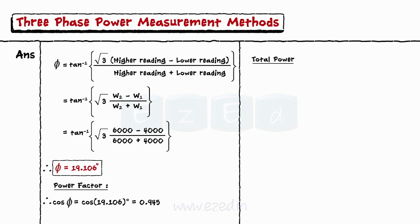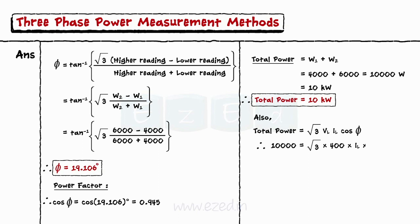The total power is given as P equals W1 plus W2 equals 10 kilowatts. But it is also given as P equals root 3 into VL RL cos phi. Equating the two equations and writing the expressions for the line current, we get RL equals 15.27 Amperes.